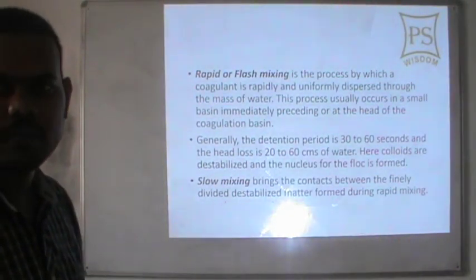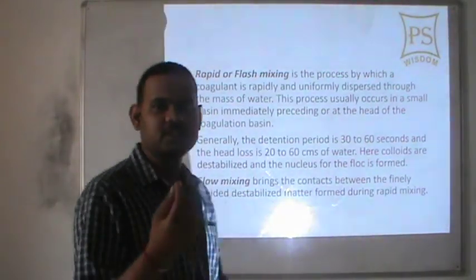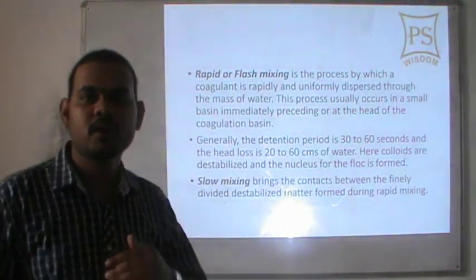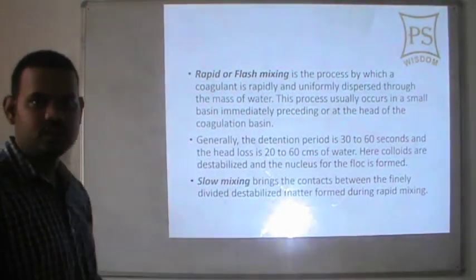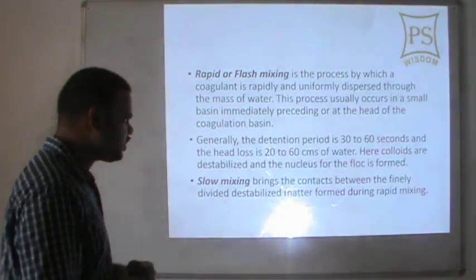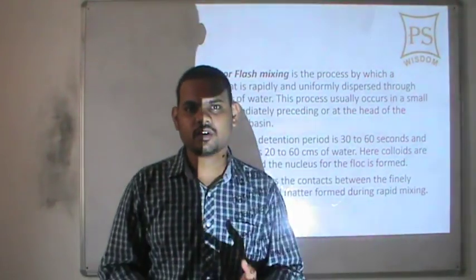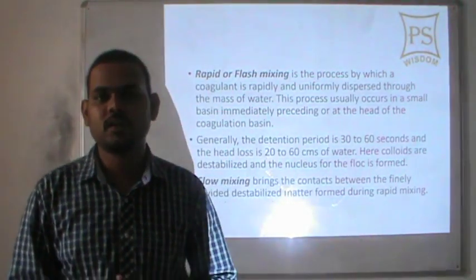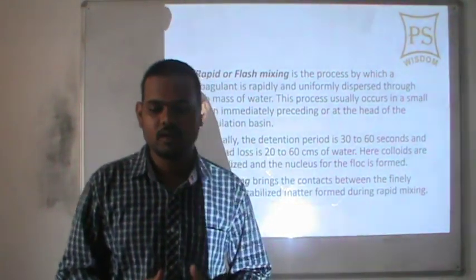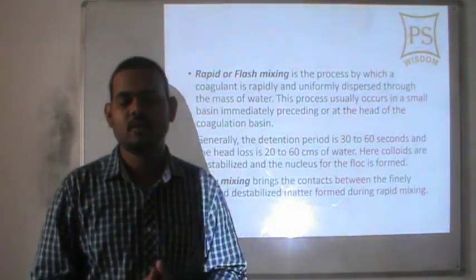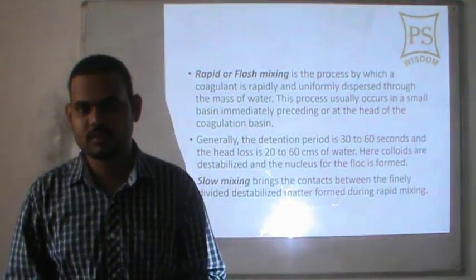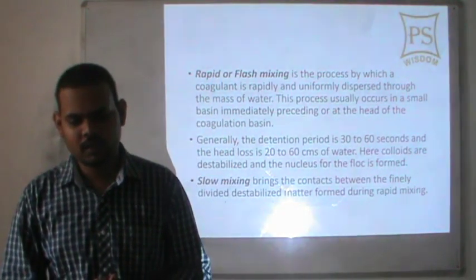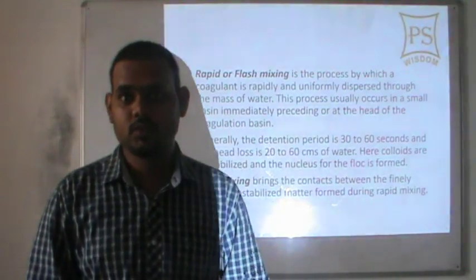In rapid or flash mixing, the nucleus for the flocks is formed. Then the full flocks are formed in the later process known as slow mixing. The retention period is generally 30 to 60 seconds — the water is detained for a maximum of half to one minute after mixing with the coagulant — and the head loss is 20 to 60 cm.